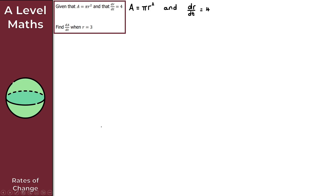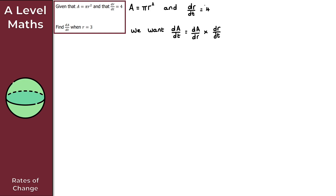What we're doing for this question is connecting rates of change, and to do that we're going to use the chain rule. We want dA/dt. To find dA/dt, using the chain rule, this equals dA/dr multiplied by dr/dt — that is, the derivative of A with respect to r, times dr/dt. We've already been given that dr/dt = 4.